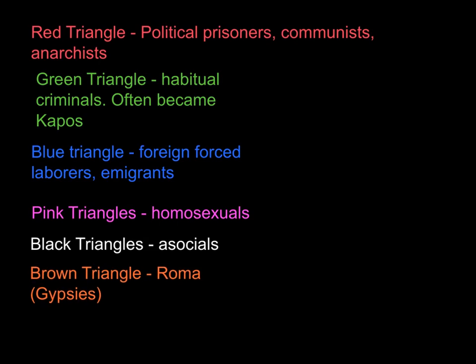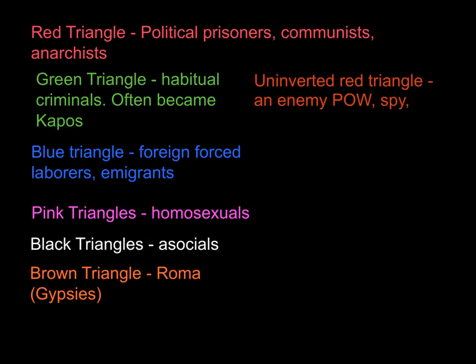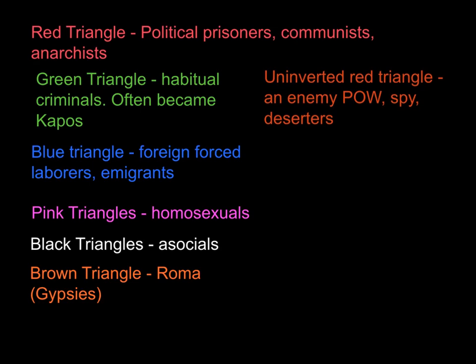And then finally we had inverted red triangles, which were for prisoners of war — enemy POWs — but it would also be used for spies and deserters. So know your triangles and the symbols associated with those as well.